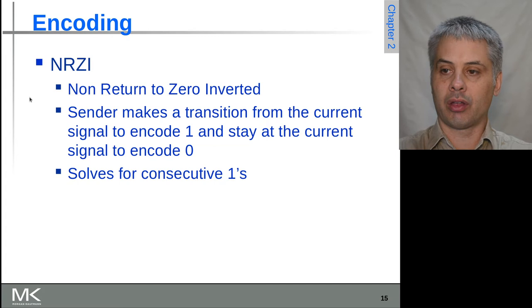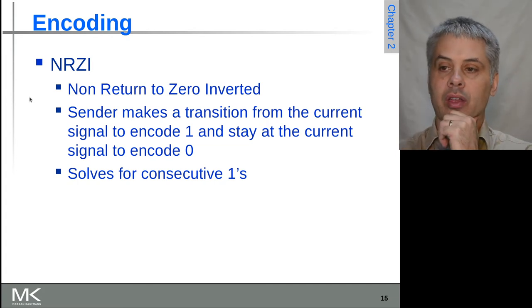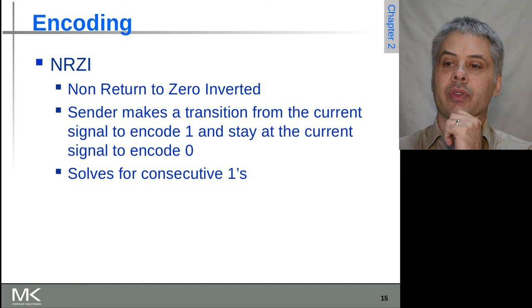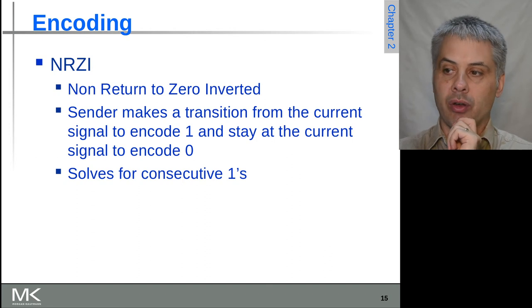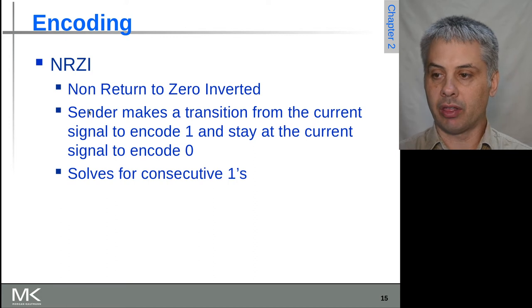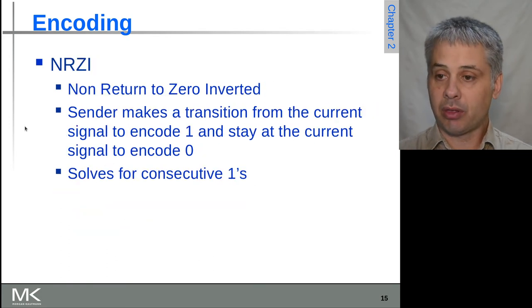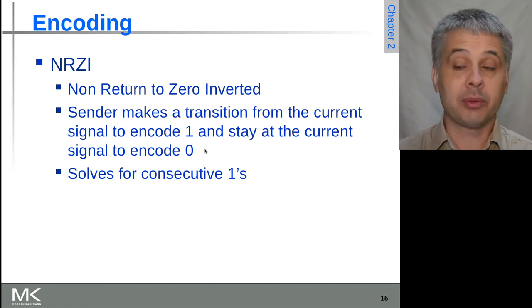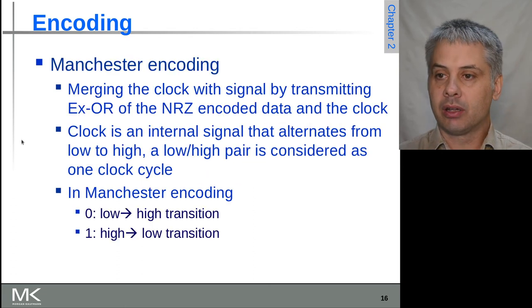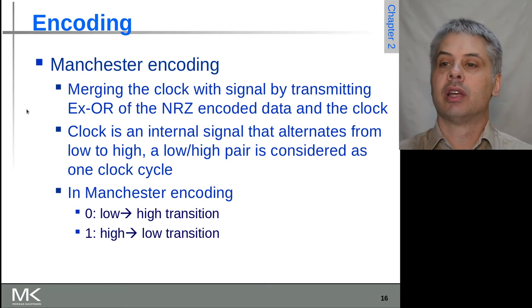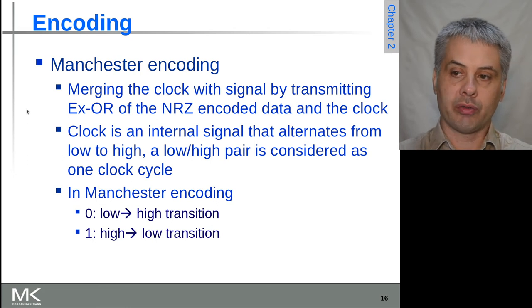NRZI is non-return to zero inverted. This is the first variation on this. The sender makes the transition to encode a one and makes no change to encode a zero. This solves the problem where you have lots of consecutive ones, but if you have lots of consecutive zeros, you still have a problem because the current will stay the same. So it was a step forward but not a complete solution.